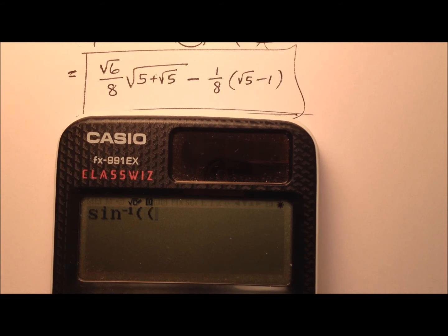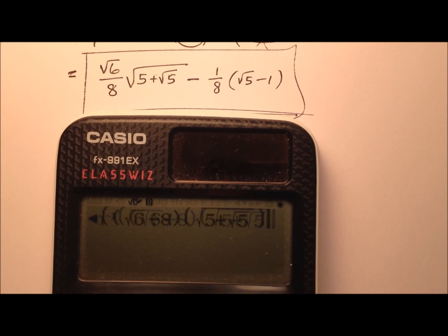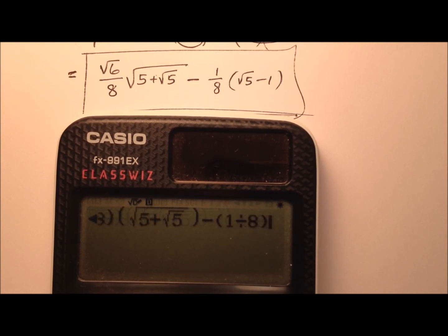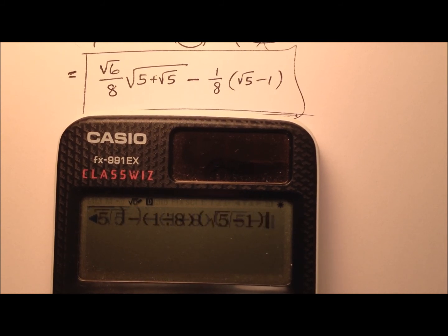So we're going to start out with the square root of 6, and we're dividing that by 8, and we're going to multiply that by this square root expression, this 5 plus radical 5, and from that we're going to subtract, and we have ourselves a 1 eighth right there, and we're going to multiply that by the square root of 5 minus 1.